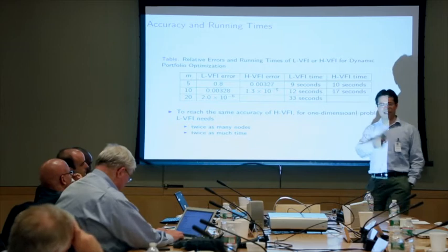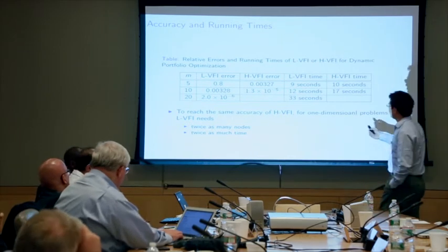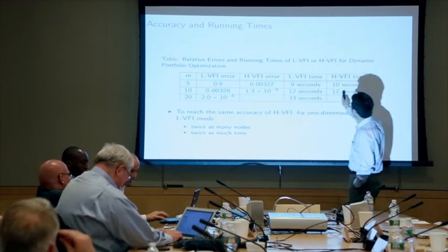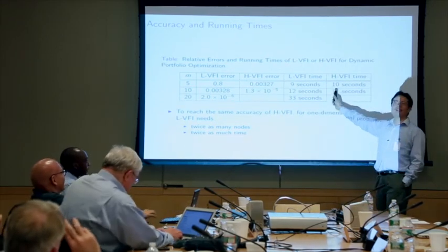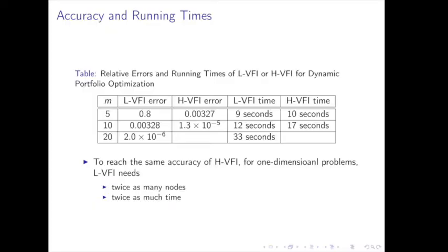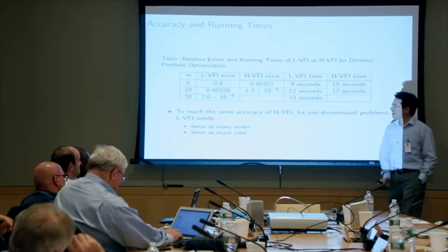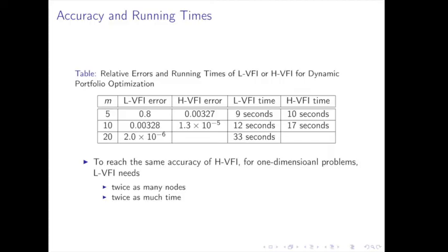Comparing computation time: with 10 nodes, the Lagrange approximation takes 33 seconds, while the Hermite approximation takes only 17 seconds — about half the time. For higher-dimensional problems, let's look at the three-country model with three continuous state variables.